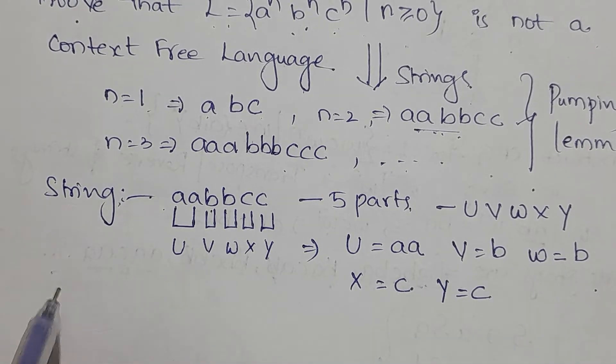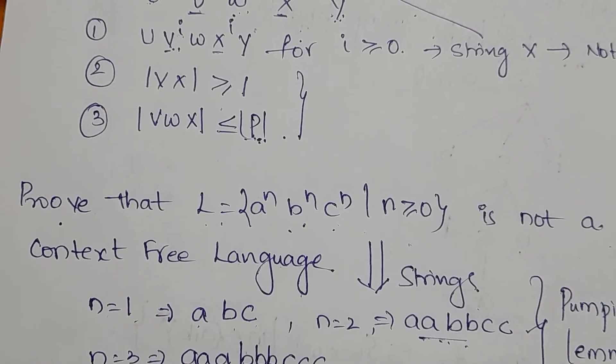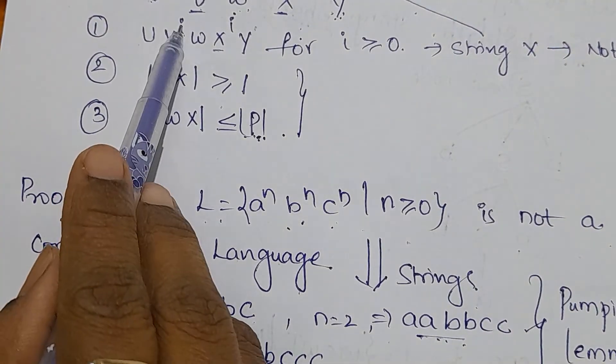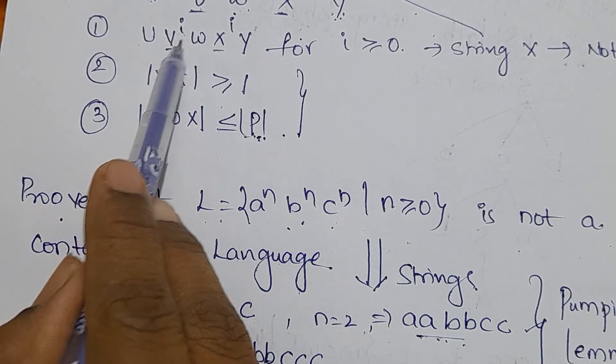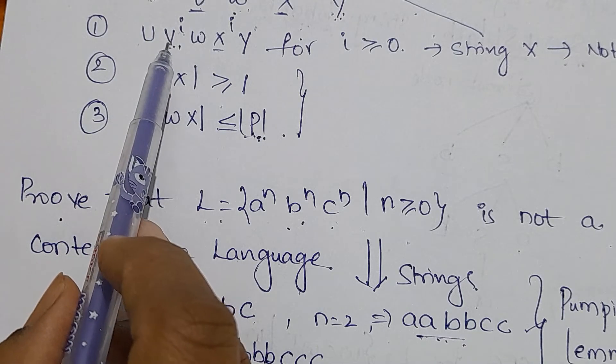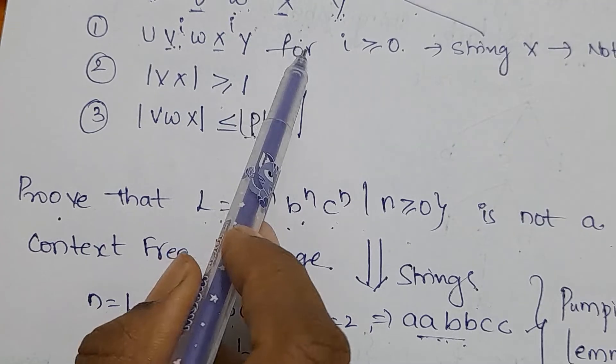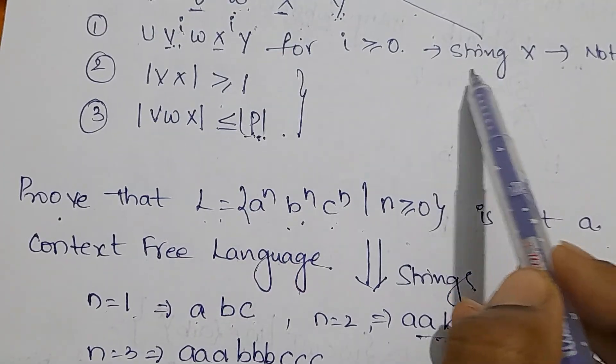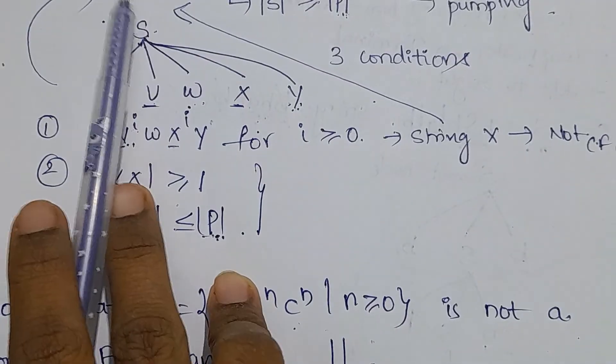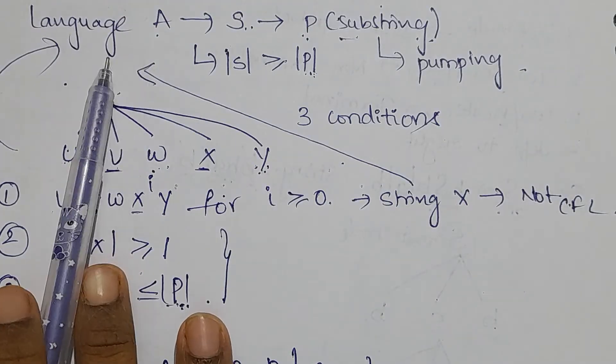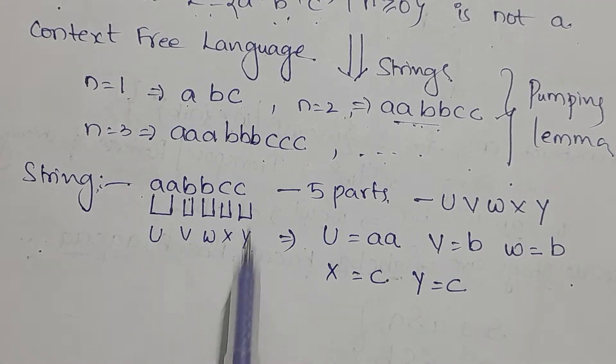We will apply rule 1: u v^i w x^i y. This means we need to repeat the substrings V and X, and whatever string we get must replicate the same structure in the given language.